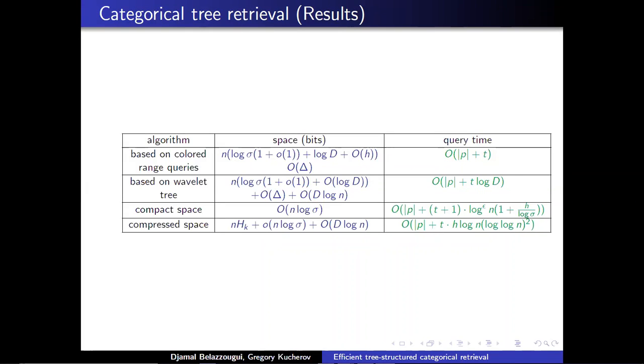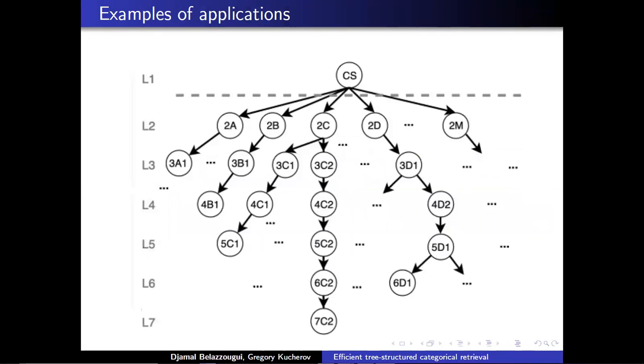We have solutions based on wavelet tree, and we finally have solutions based on compressed data structures for text and document retrieval. This is an example of an application: the classification of the ACM. ACM has a classification of scientific subfields of computer science.